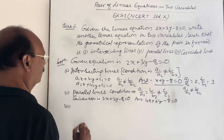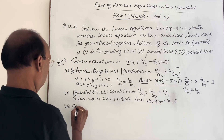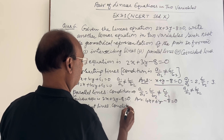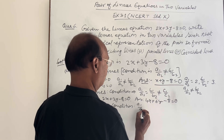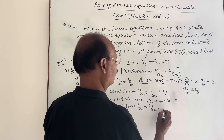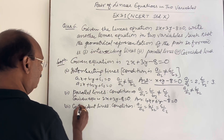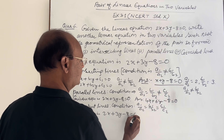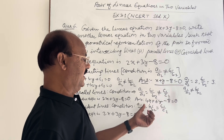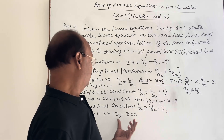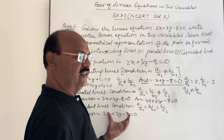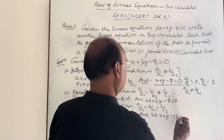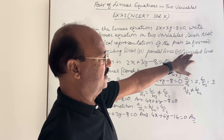The third case is coincident lines. What is the condition here? We must keep in mind that the condition for coincident lines is a1/a2 = b1/b2 = c1/c2. The given equation is 2x + 3y - 8 = 0. Since all three ratios must be equal, we simply multiply the entire equation by 2. The answer is 4x + 6y - 16 = 0. This is the answer for case 3, when lines are coincident.